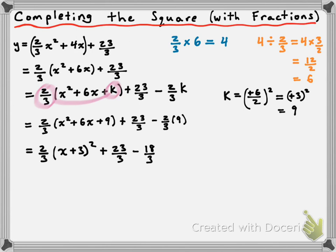Now, negative 18 over 3 does simplify to negative 6, but notice that we have positive 23 over 3 and minus 18 over 3 — they already share a common denominator of 3. If we simplified negative 18 over 3 to negative 6, we'd lose that common denominator and create more work. So we leave it as minus 18 over 3 and combine: 23 over 3 minus 18 over 3 gives us 5 over 3. That gives us 2 thirds times x plus 3 squared plus 5 over 3, which is now in vertex form.